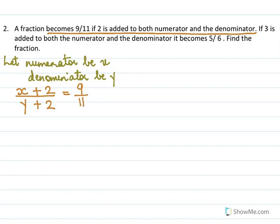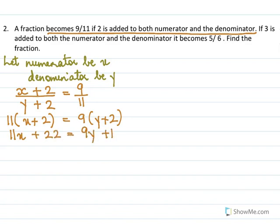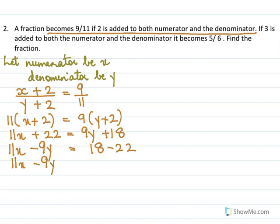Cross multiplying: 11(x plus 2) equal to 9(y plus 2). Opening the bracket: 11x plus 22 equal to 9y plus 18. Bringing x and y terms together: 11x minus 9y equal to minus 4. This is equation 1.